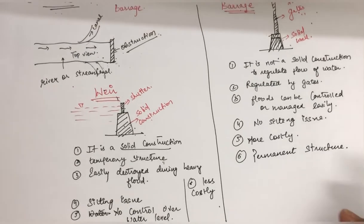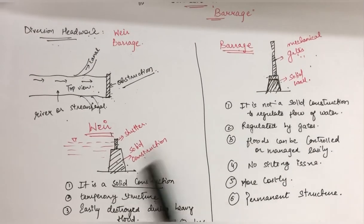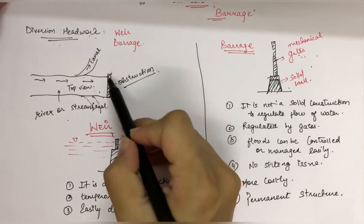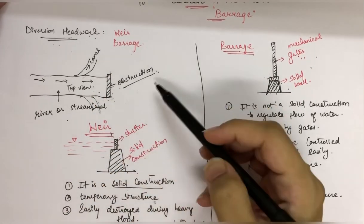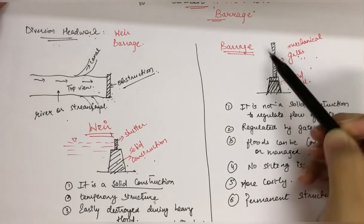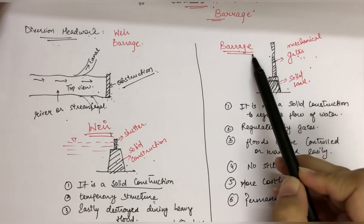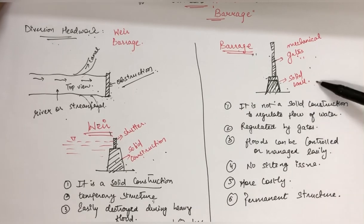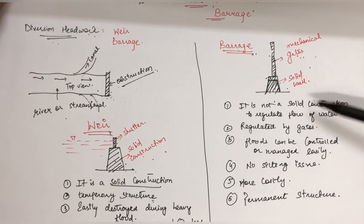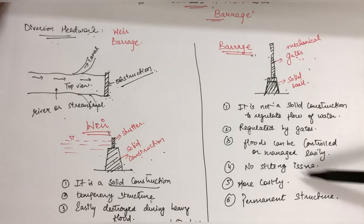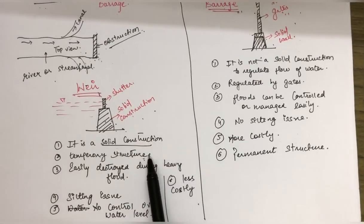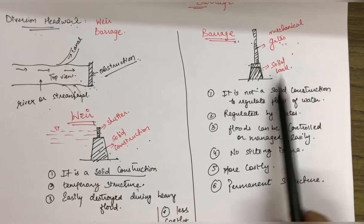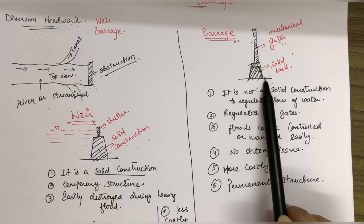This is the basic difference between two types of diversion headwork — wear and barrage. Both are types of obstructions provided across the river. But nowadays barrage is more used as compared to wear because of its advantages over wear.